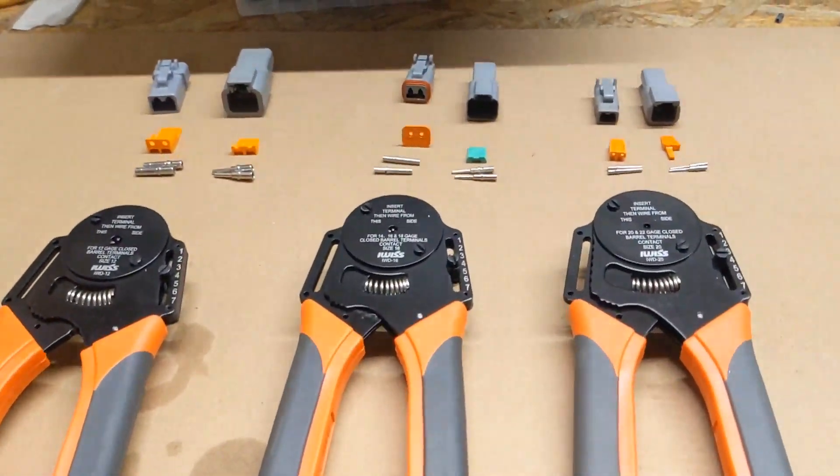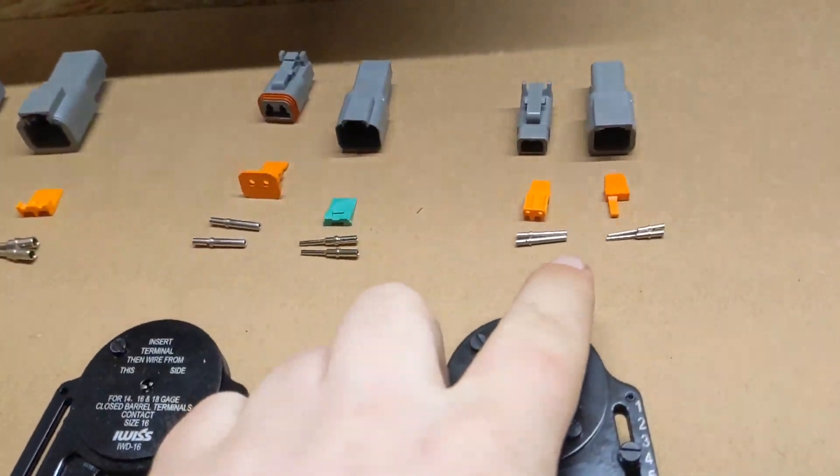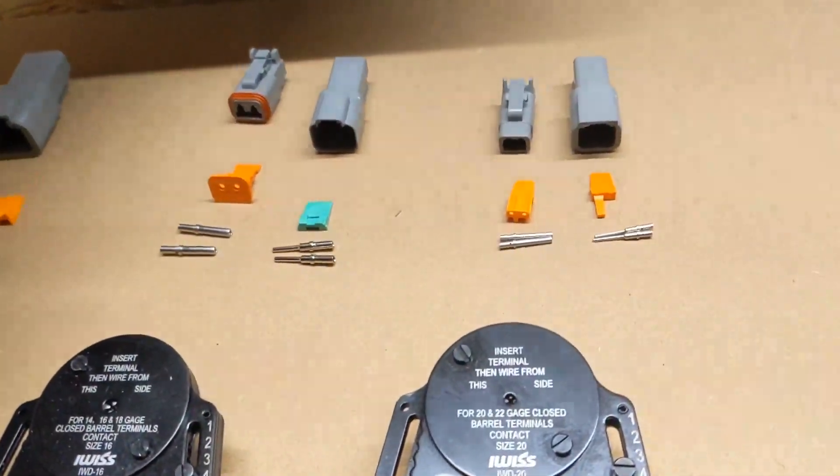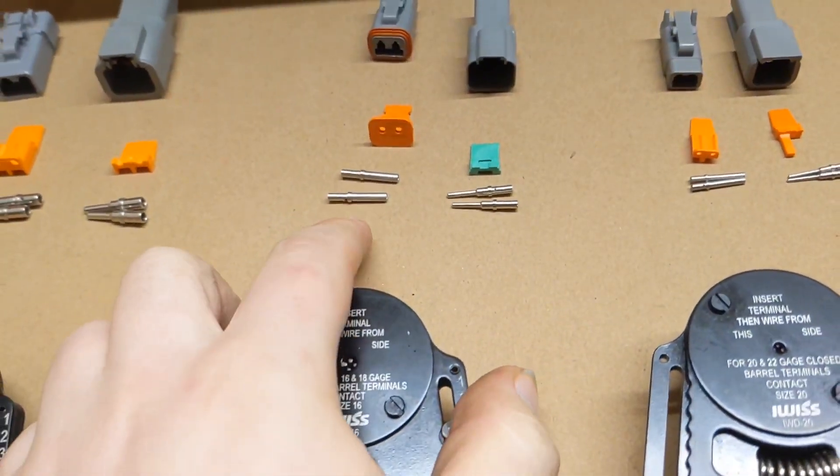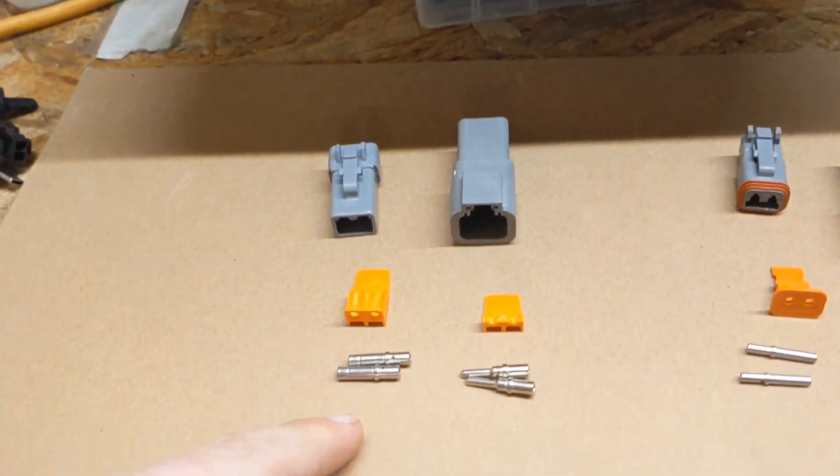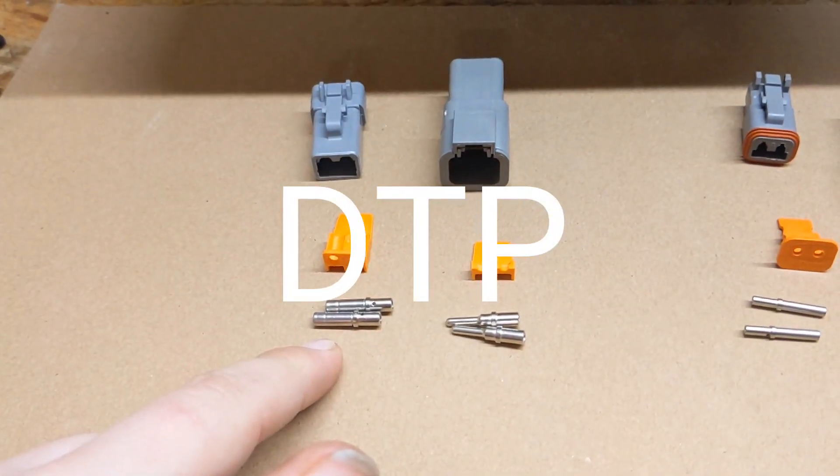The DT series comes in three different sizes. You've got DTM, which is your small connectors, good for about 7 amps. You've got your DT connectors, which are good for 13 amps, and then you have your DTM, which are the big ones that do 25 amps.